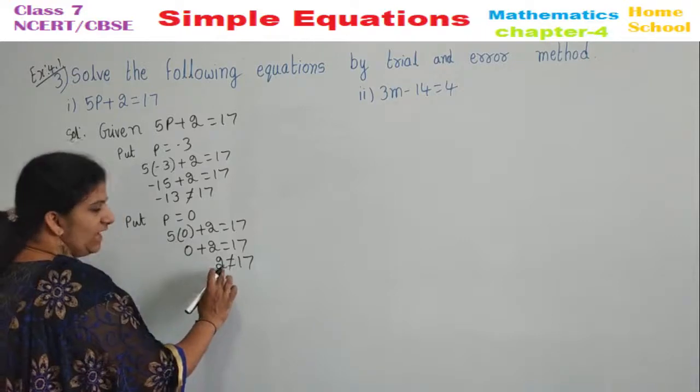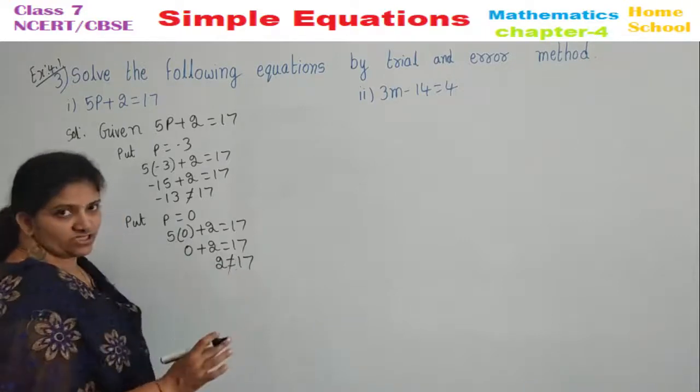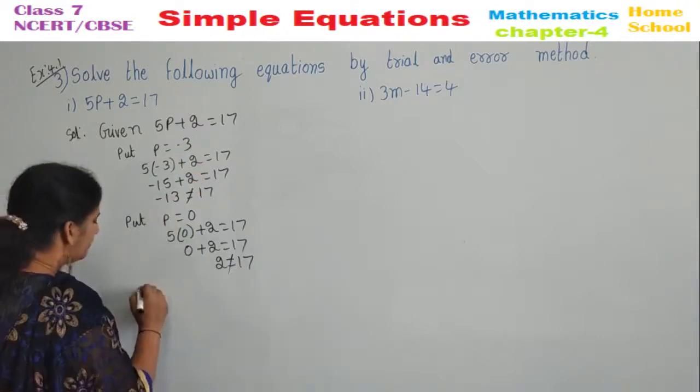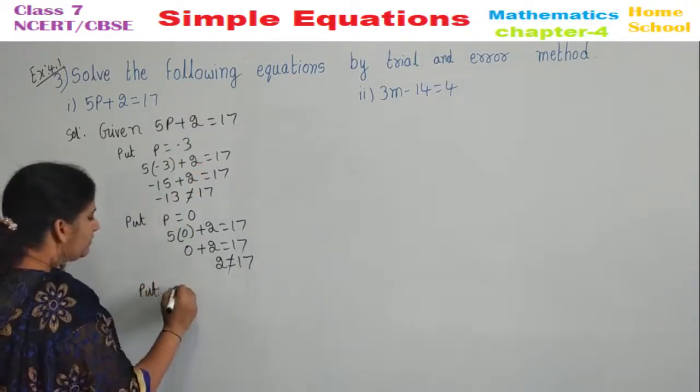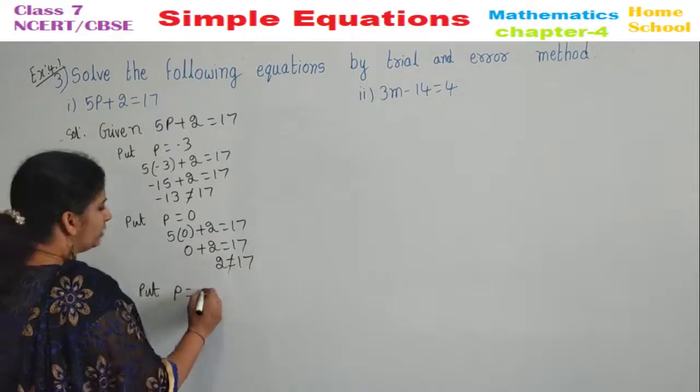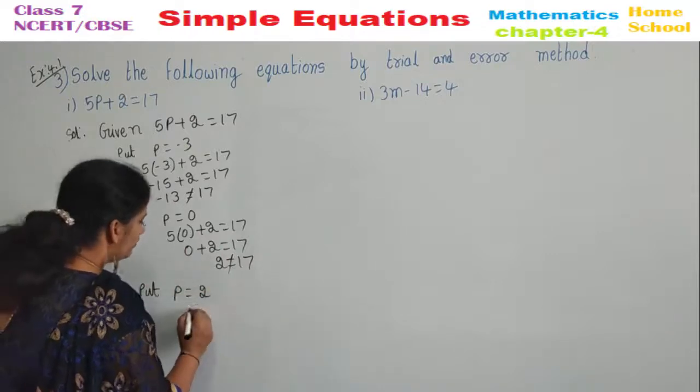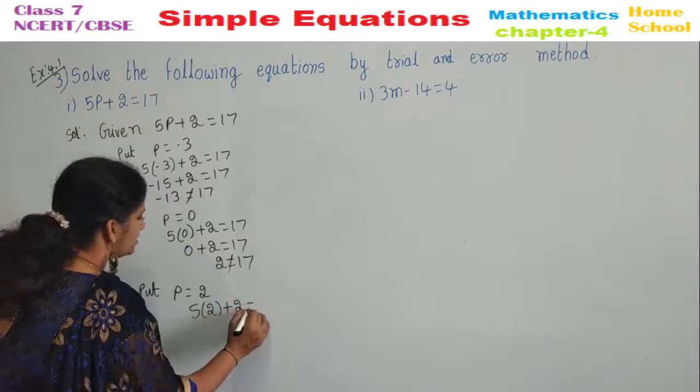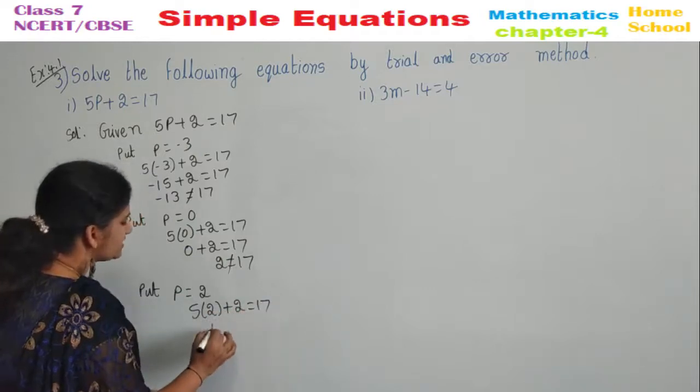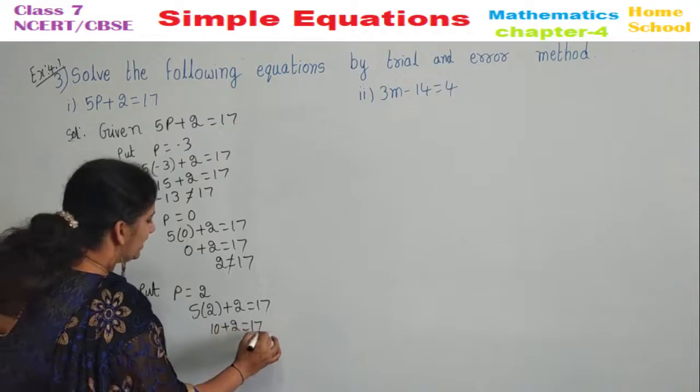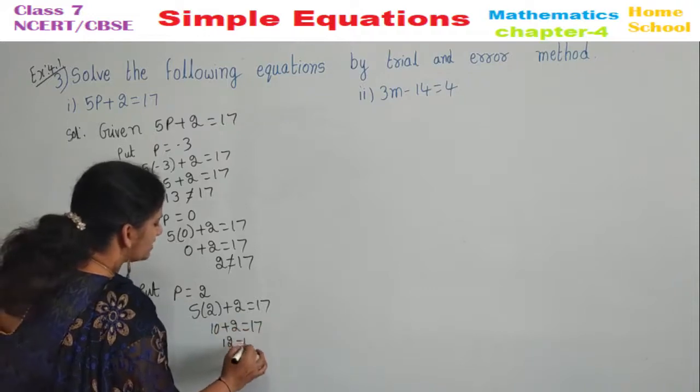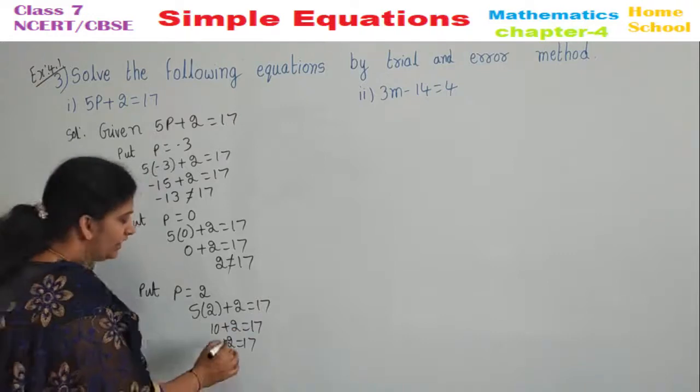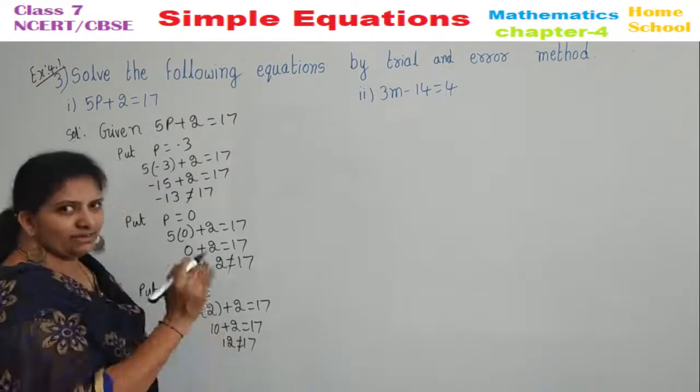2 is a positive value and 17 is also a positive value, having little difference. Let's take a bigger number. Put P is equal to 2. 5 into 2 plus 2 equal to 17. 10 plus 2 equal to 17. 12 equal to 17. Are these two equal? No, they are not equal but they are little nearer.